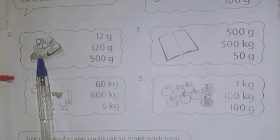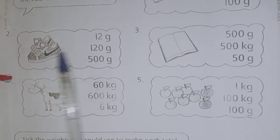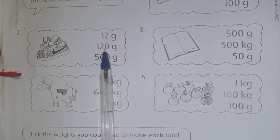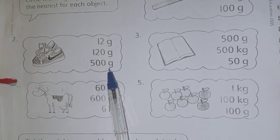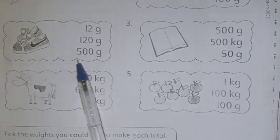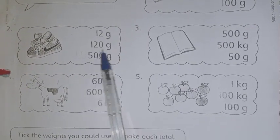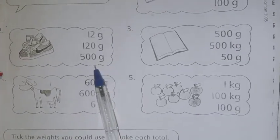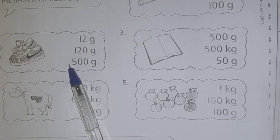Then you can see a pair of shoes here. You have to guess the weight of this pair of shoes. That is 12 gram, 120 gram, 500 gram. Then you can see that it may weigh 500 gram. 500 gram means half kilogram. So you can circle this 500 gram.